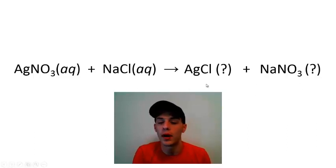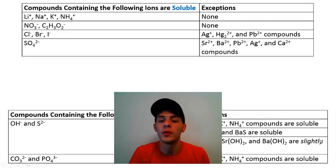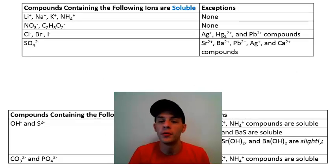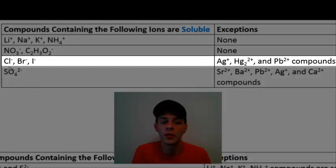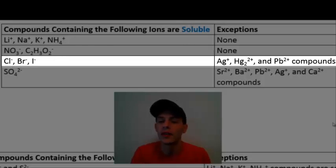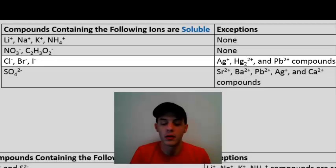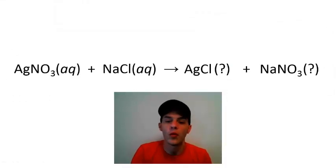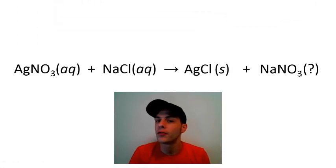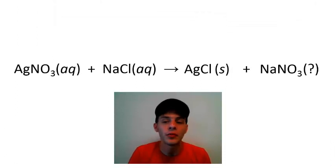Let's start with silver chloride. Referring to the solubility rules, there's a rule for chlorides, bromides, and iodides — they are generally soluble in water. However, silver chloride is an exception and is therefore insoluble in water. So silver chloride is going to get an S for solid, not an AQ for aqueous.